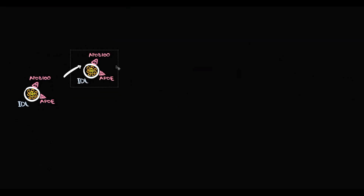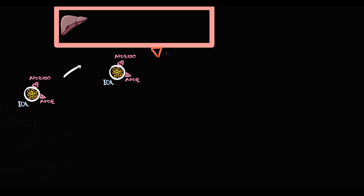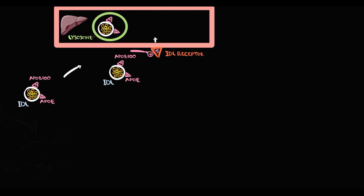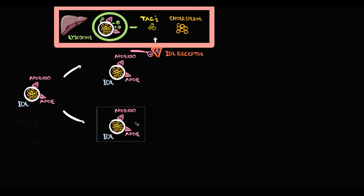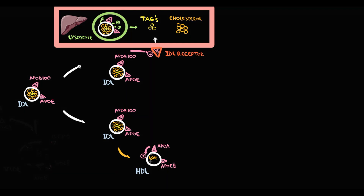Most IDL then circulates in the bloodstream and comes to the liver. On the surface of hepatocytes is located a specific IDL receptor. Intermediate-density lipoprotein binds via ApoE and ApoB100 to the IDL receptor on the surface of hepatocytes, and once IDL binds, the liver takes up and degrades IDL in the lysosomes into triacylglycerols and cholesterol. However, a smaller amount of IDL gives to HDL not only ApoC2, but also a significant portion of cholesterol. Then ApoA on the HDL surface activates a specific enzyme called lecithin-cholesterol acyltransferase, or LCAT.